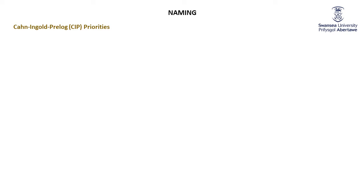The idea of CIP priorities is that you have an atom bonded to other atoms. In our case, a chiral atom bonded to four other atoms. We need to assign priorities to those groups. The atom bonded to our atom of interest that has the higher atomic number gets the higher priority. If two bonded atoms are the same, you keep working backwards away from the chiral carbon until you find a difference, and use that difference to assign the priority.